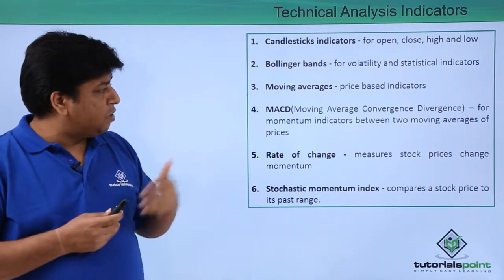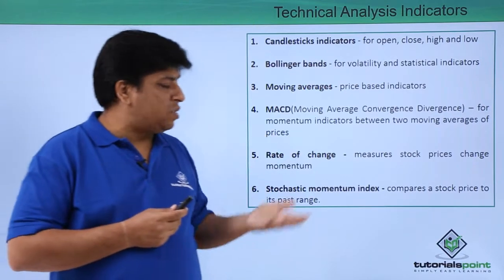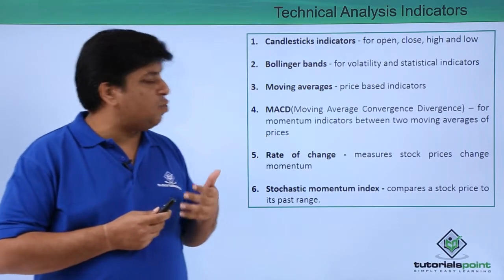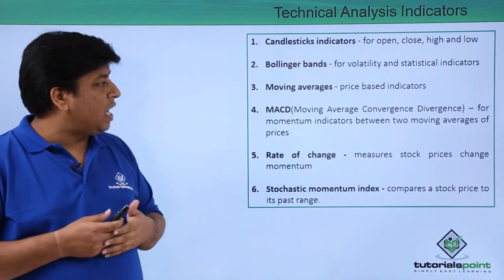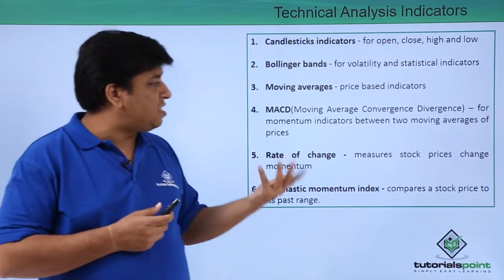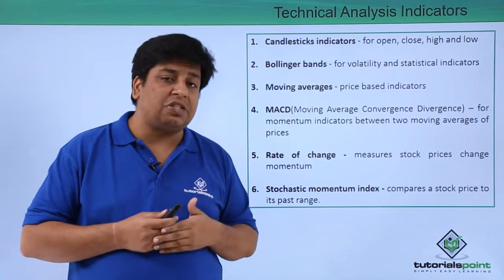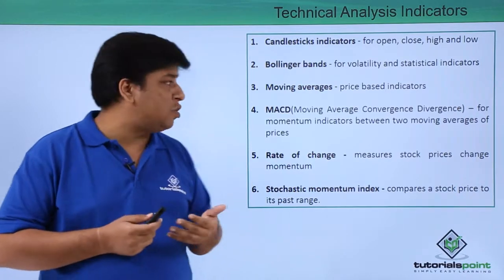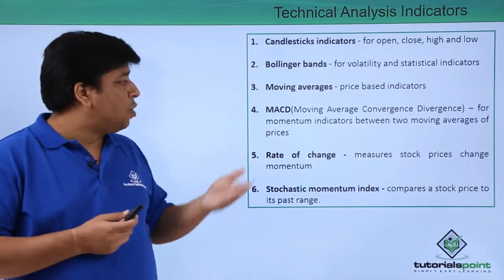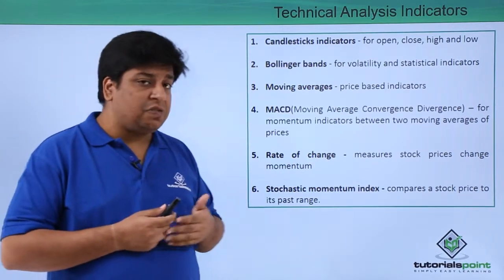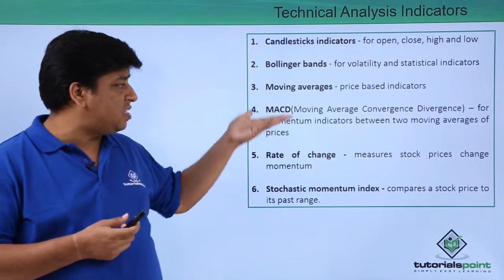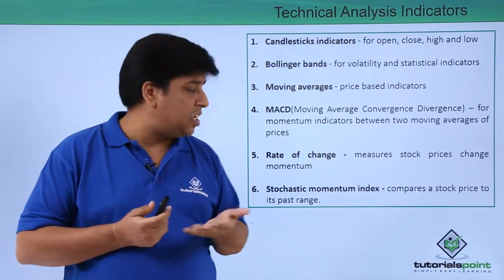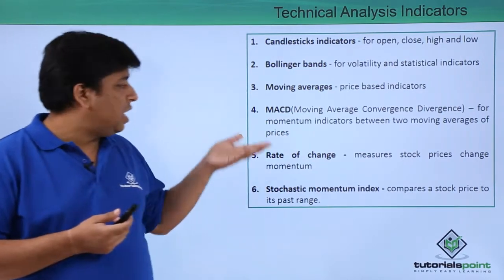Bollinger Bands is basically used to calculate what is the volatility and statistical indicator for the particular stock. Moving average is basically about trend analysis — this is a price-based indicator.